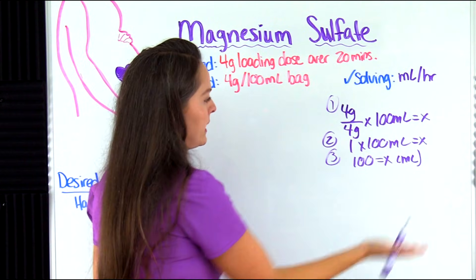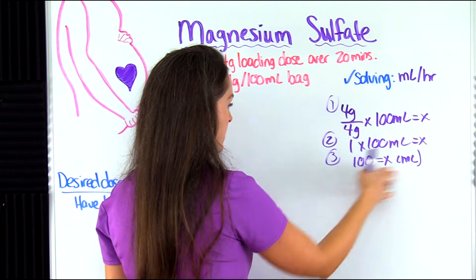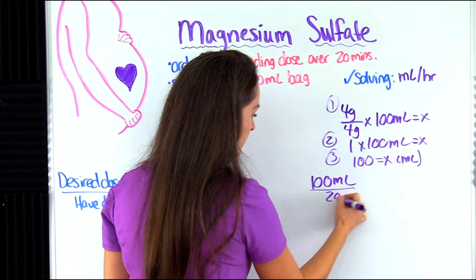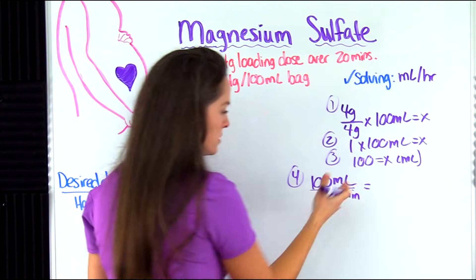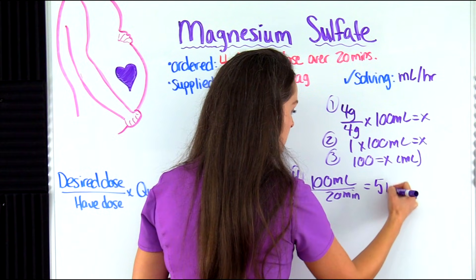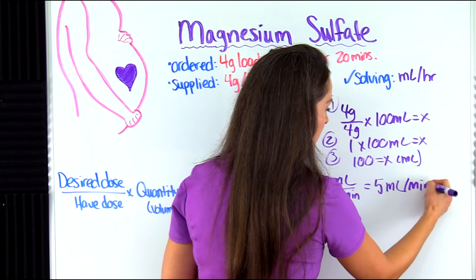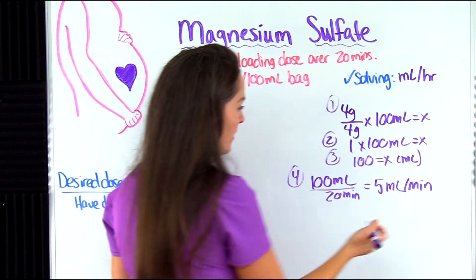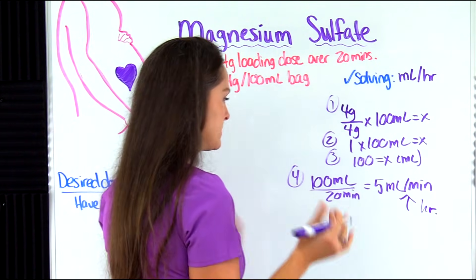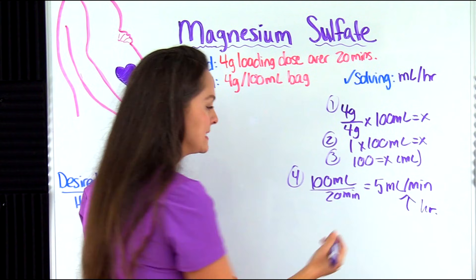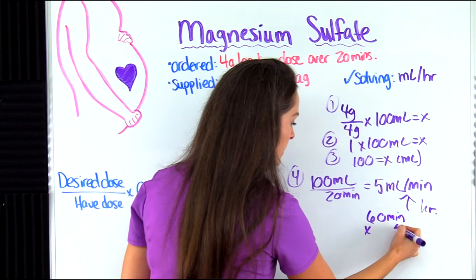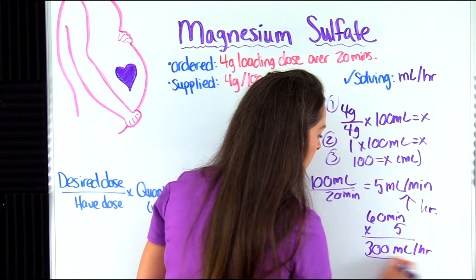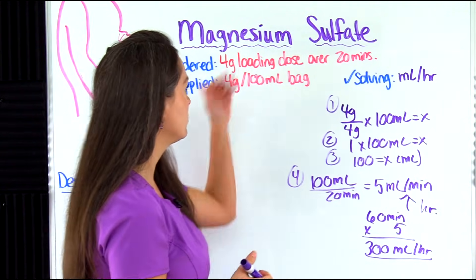We know these 100 mLs have to go in over 20 minutes. So 100 mLs over 20 minutes — we divide: 100 divided by 20 gives us 5 milliliters per minute. But I need milliliters per hour, so I've got to convert. How many minutes are in an hour? There are 60 minutes in an hour. So 60 minutes times 5 mLs gives us 300. So 300 milliliters per hour is what our loading dose infusion rate will be.